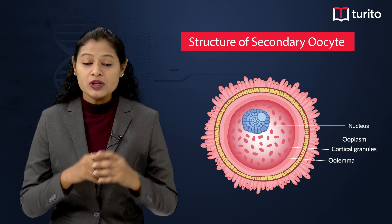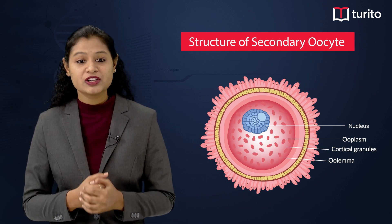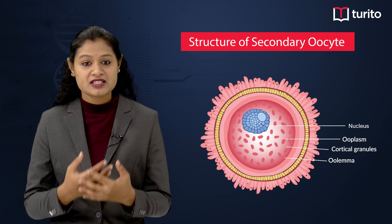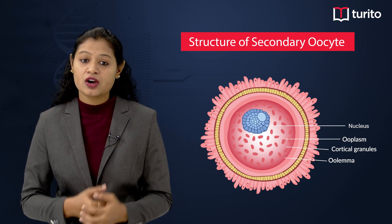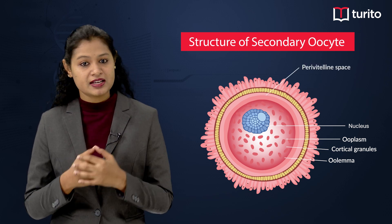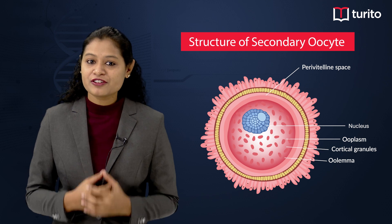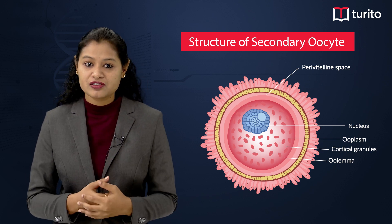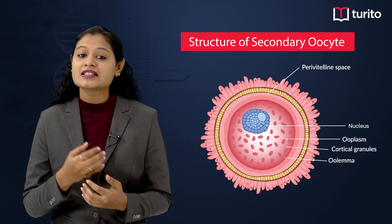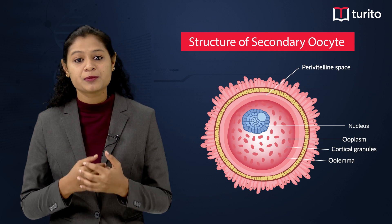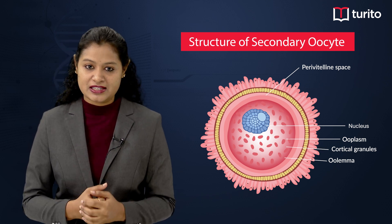The oolemma is surrounded by another membrane called the perivitelline membrane, which encloses a space called the perivitelline space. During fertilization, the division of the secondary oocyte is completed and the second polar body is released into the perivitelline space.